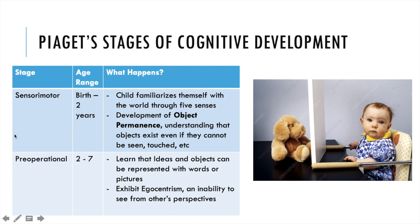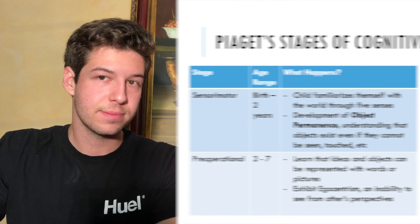Next up is the pre-operational stage, ages two to seven. Children learn how to convey and represent ideas and objects with words and language, but they lack logical reasoning. They also lack an understanding of what Piaget called conservation — an understanding that an object's weight or number remains unchanged even if the object itself is manipulated to look different. Children in the pre-operational stage also exhibit egocentrism, an extreme inability to see things from others' perspectives. For example, a child who has thrown a blanket over his face thinks that adults can no longer see him, because he can't see them.